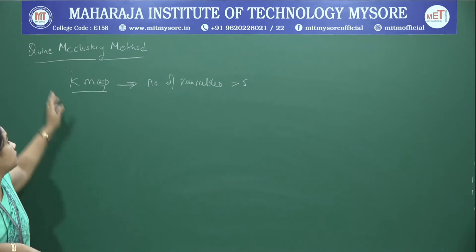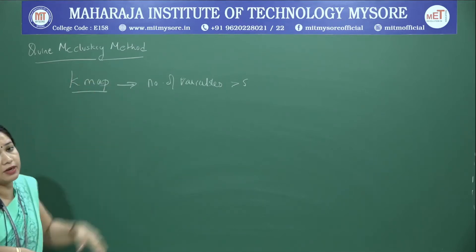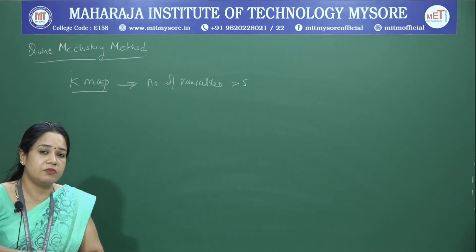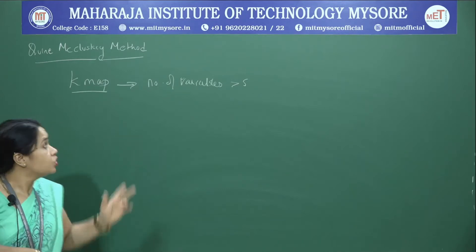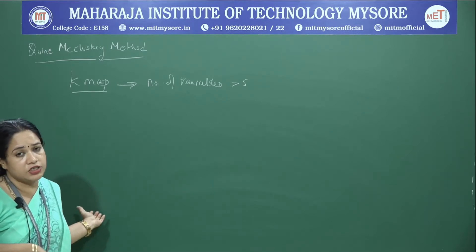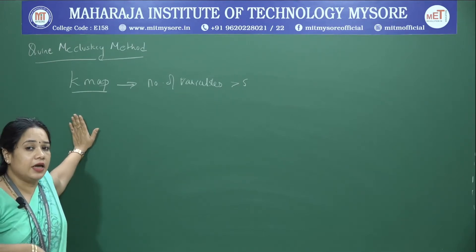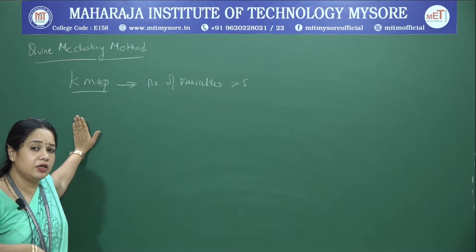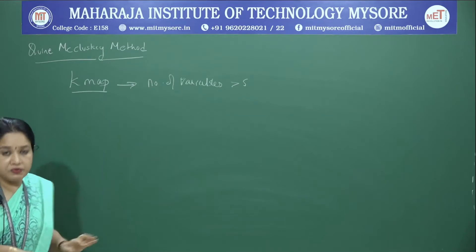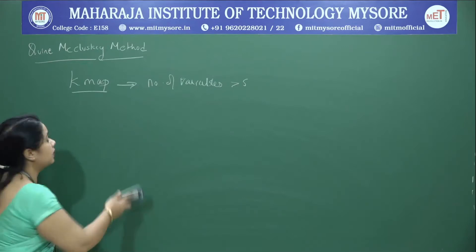The Quine-McCluskey method was designed by Willard Quine and extended by McCluskey. We give the name — this method has been named after them. Rather than writing down steps abstractly, I will take an example and explain how Quine-McCluskey can be used to simplify a given expression. We will straight away take a four variable example and see how the method can be applied.